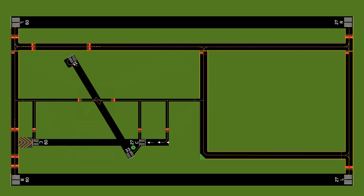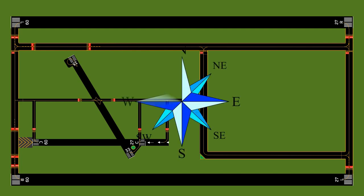Runway numbers are not assigned randomly — there's a very efficient system based on their magnetic heading on a compass rose. A compass has numerical headings associated with directions: north is 0 or 360 degrees, east is 090, south is 180, west is 270, and back to 360. That's your compass.